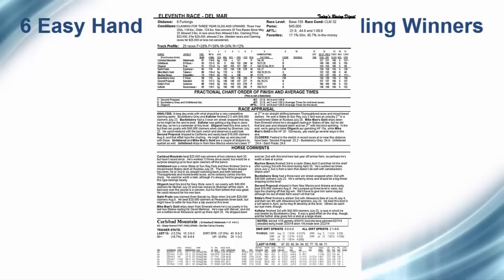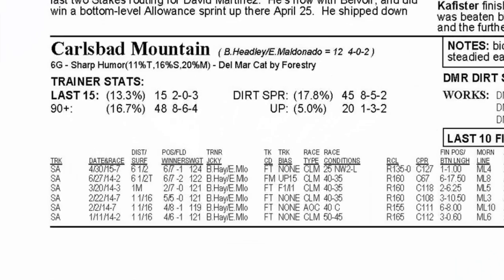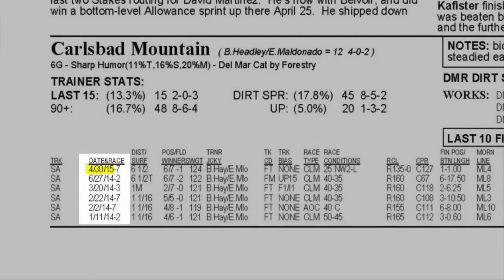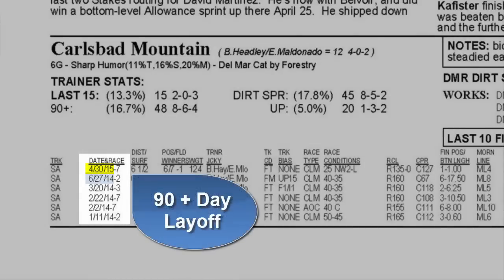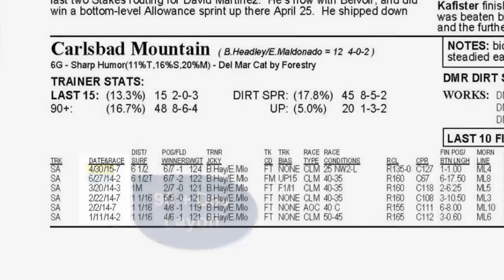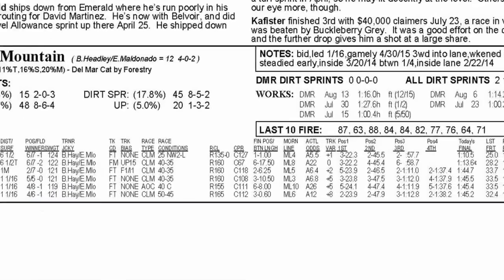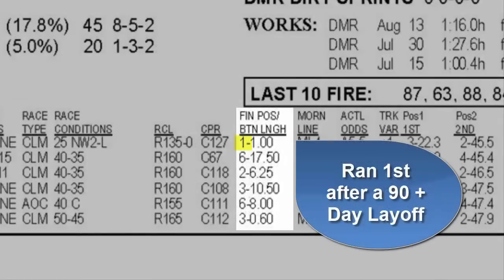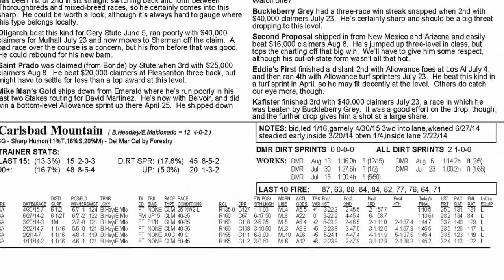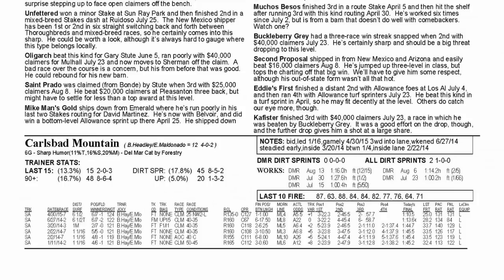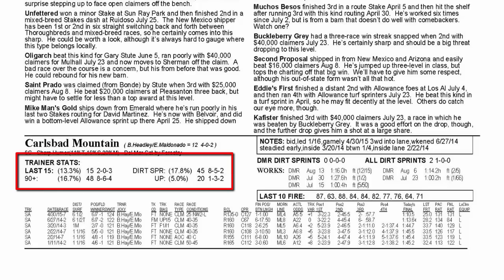To determine how a horse performs following a break, look at the horse's past performances and identify any breaks in the horse's past racing. You will then want to see how the horse performed in that race following the break by looking at the finish position column. The race sheets make it easy to determine how a trainer does with horses coming off a layoff. To do this, you will want to look at the trainer stats in the race sheets under the horse's data box.